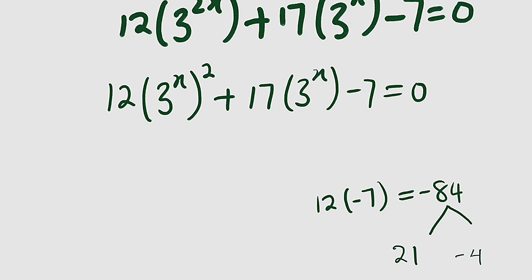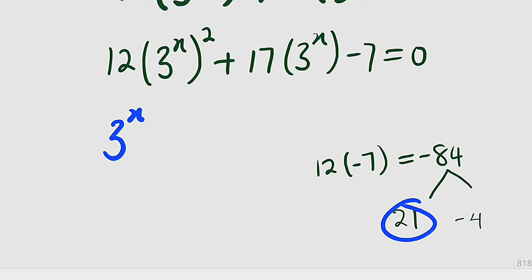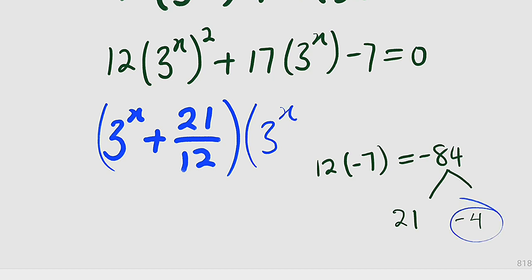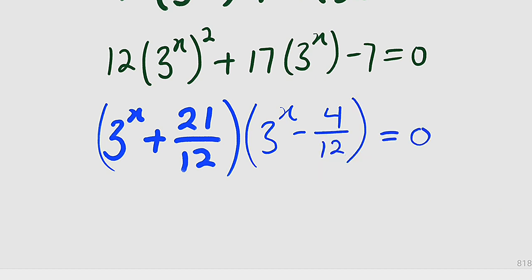So how can we factorize it? We take 3 to the power of x, which is like our normal x, then the first number here, which is 21, positive 21 but divided by the leading coefficient. Whenever the leading coefficient is not 1, you can apply this method if it is factorable. Then you multiply by 3 to the power of x again, then the next number, which is negative 4, but negative 4 also divided by the leading coefficient. The whole of this equal to 0.